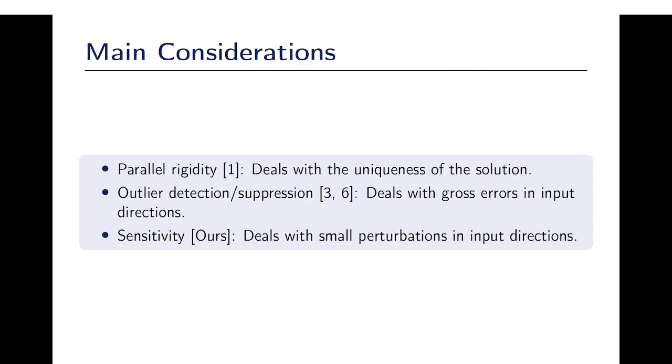Here are the main considerations for translation averaging. The first is parallel rigidity that deals with the uniqueness of the solution. The second is outlier detection or suppression that deals with gross errors in the input directions. And we deal with sensitivity where we check for changes in output with small perturbations in input directions.